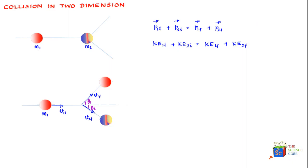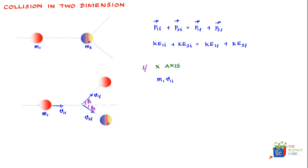Let's look at what is happening along the x and y axes. Along the x-axis, momentum is conserved. The initial momentum along x is m1 v1 initial, and since mass m2 was stationary before the collision, its momentum is zero. This should equal the momentum of m1 along x, which is m1 times v1 final cos(theta1), plus the momentum of m2 along x, which is m2 times v2 final cos(theta2).